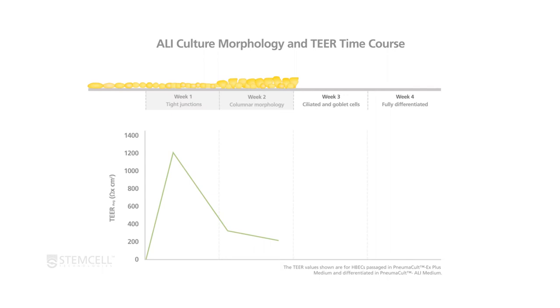At week 3 post-ALI, as the cellular differentiation into ciliated cells and goblet cells continues to develop, the TEER values remain within the ideal TEER range.